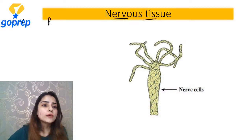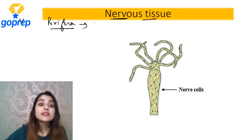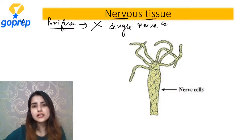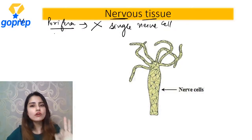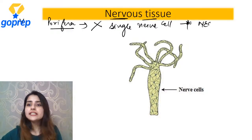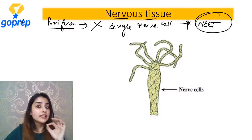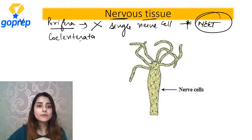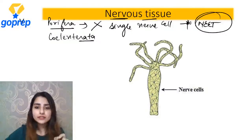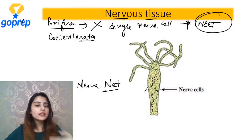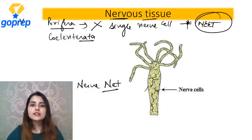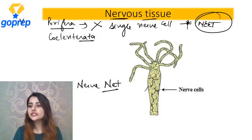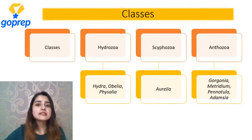Talking about their nervous tissue - jab meinne baat ki thi Porifera ki, Porifera mein there was not even a single nerve cell. Porifera was the only phylum without any cell of nervous system - is baat ko mark kar lo, star bana lo, NEET ka question likh lo. Porifera hi ek akela aisa phylum hai jismein ek bhi nerve cell nahi hai. Ab hum aaye hain Coelenterata pe - yahaan par nerve cells are present and they are forming a net - that is called as nerve net. Isi se woh apna control and coordination karte hain.